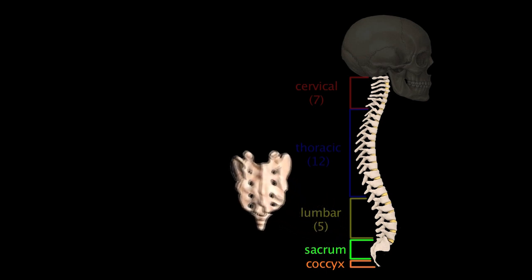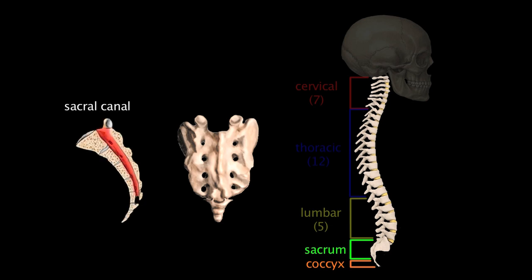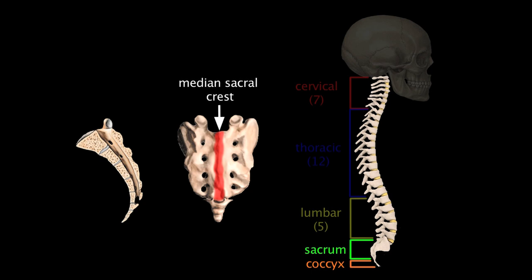The sacrum is easily distinguishable as a large, triangular, wedge-shaped bone at the base of the vertebral column. There is an opening called the sacral canal that runs through the sacrum, which is continuous with the vertebral canal above it and transmits the inferior portion of the spinal cord. Along the medial line on the posterior surface of the sacrum, there is a ridge referred to as the median sacral crest, which represents the fused spinous processes of the sacral vertebrae. Laterally, in either direction from the crest, you will find a row of three or four pairs of sacral foramina, which allow for the exit of the posterior and anterior rami of the spinal nerves at that level.